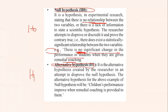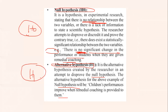On the other hand, the alternative hypothesis is used to disprove the null hypothesis. For example, the alternative hypothesis would state that children's performance improves when remedial coaching is provided to them. So H0 states no relationship, whereas H1 disproves the null hypothesis.